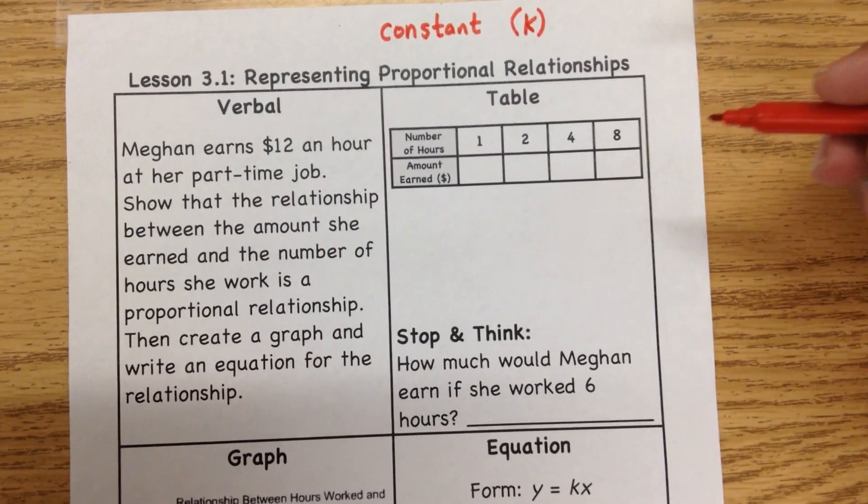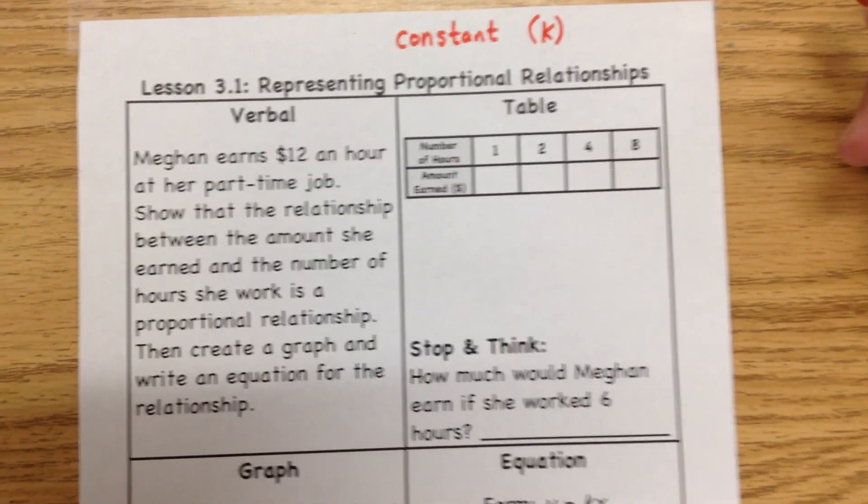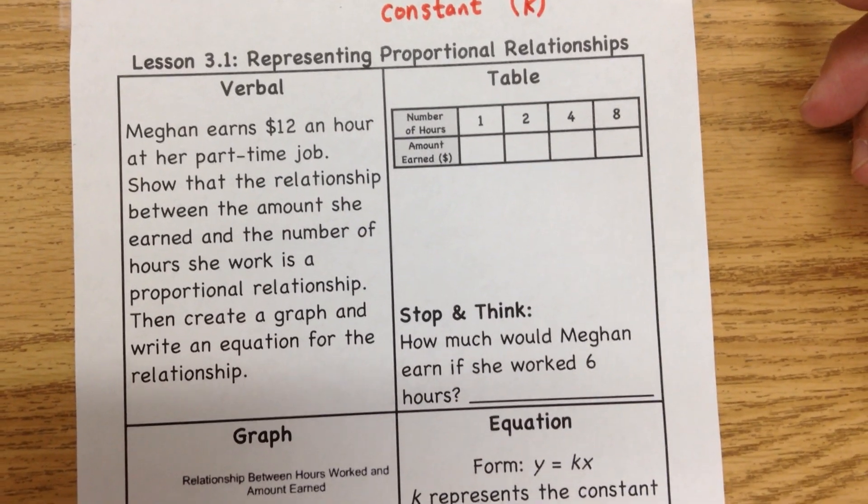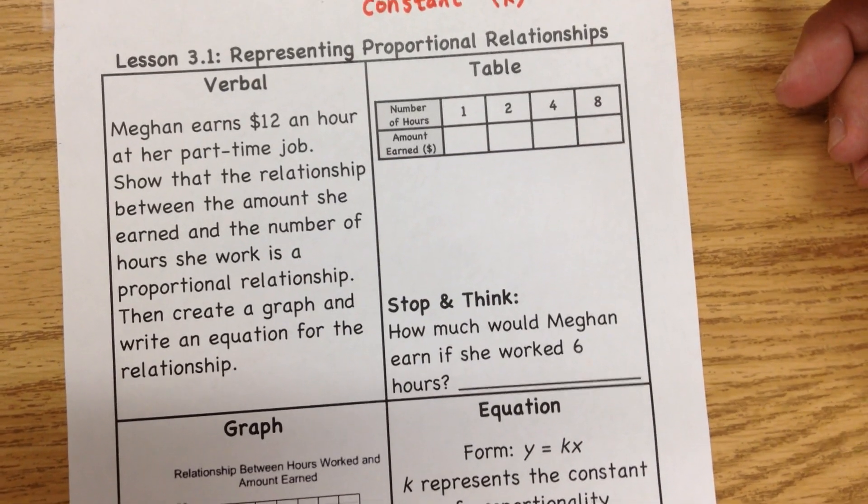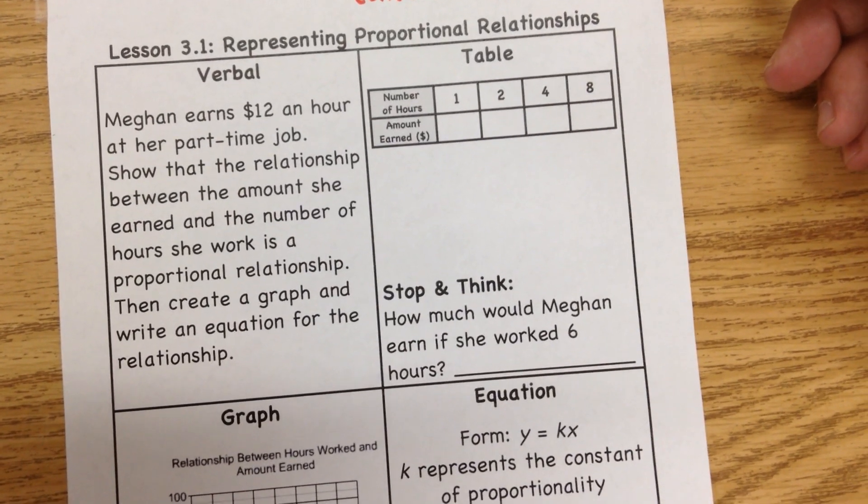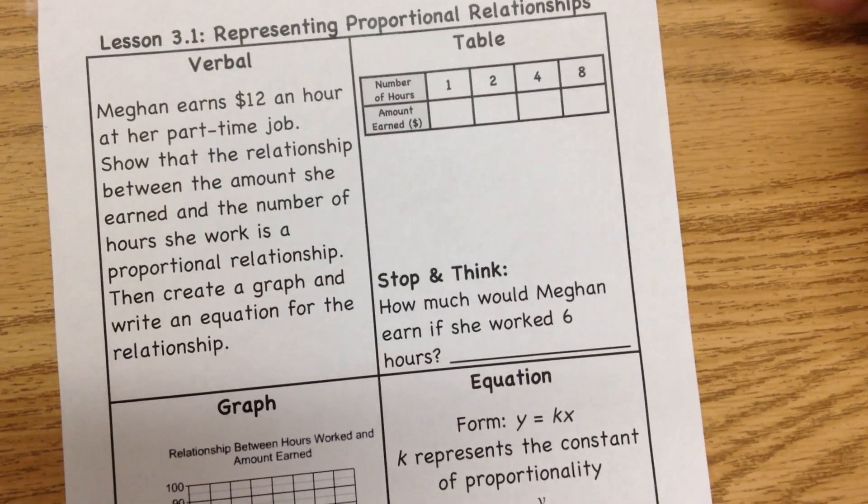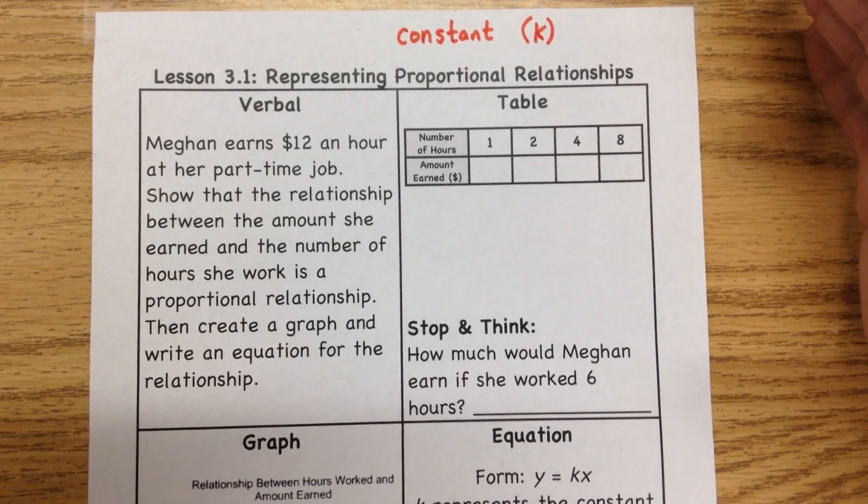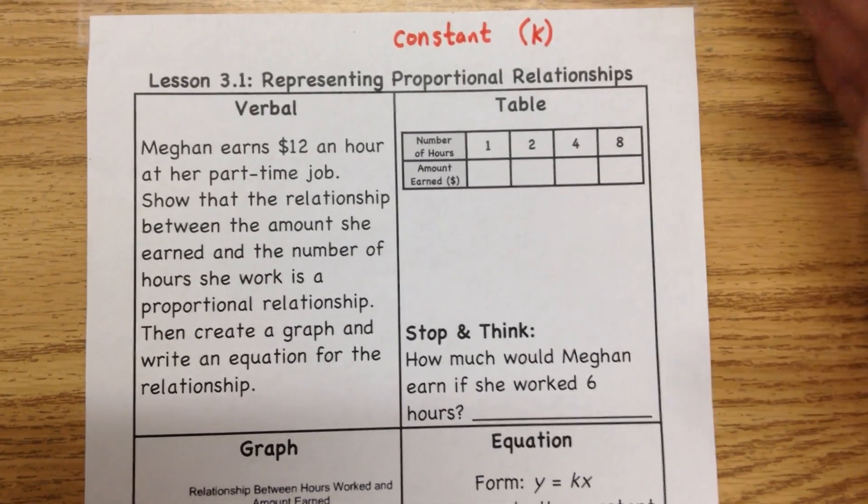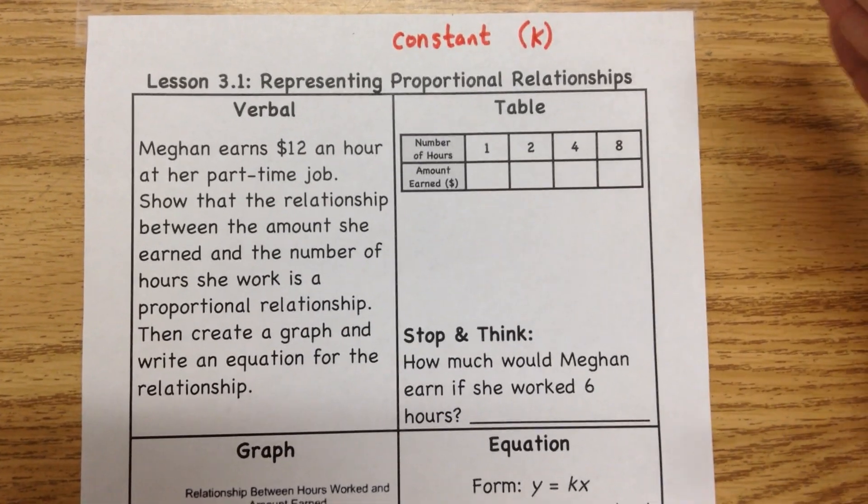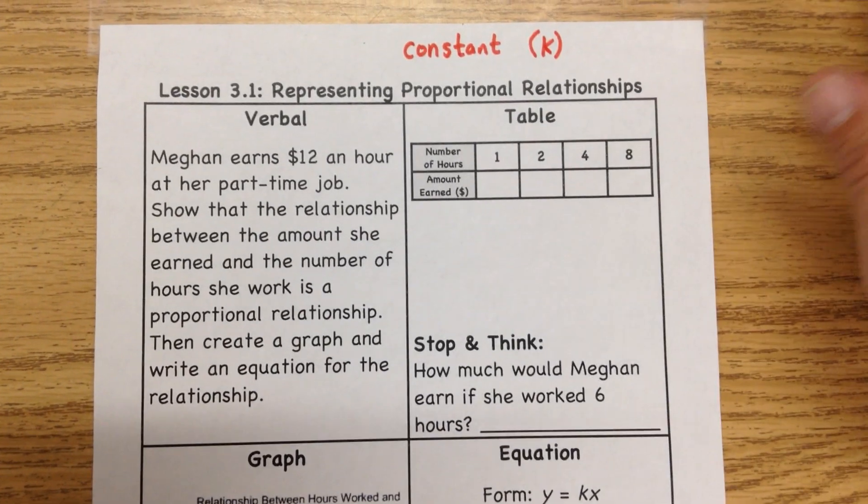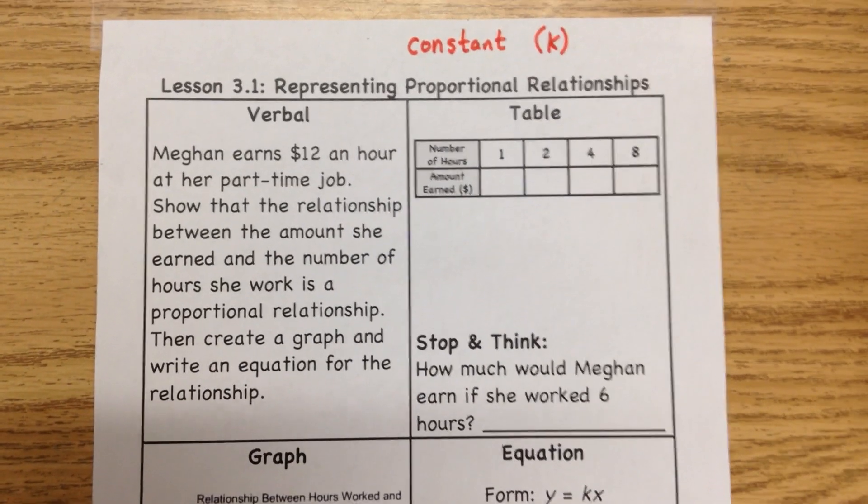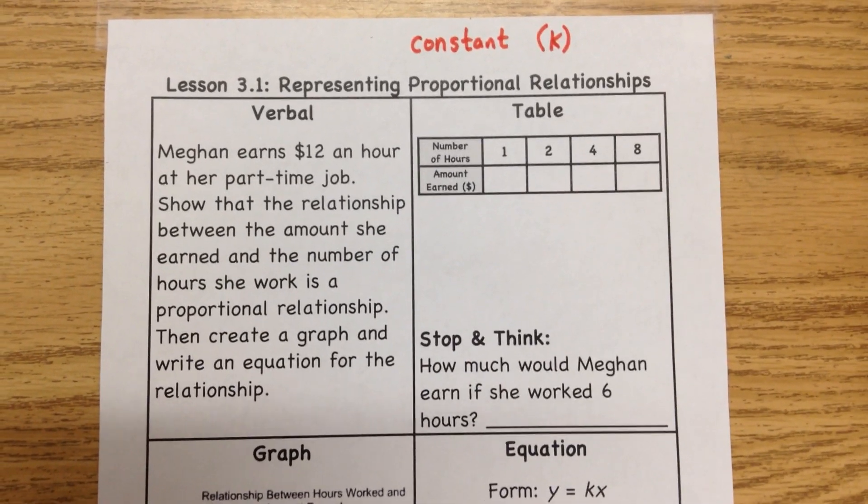The first question we have, the first situation, says Megan earns $12 an hour at her part-time job. Show that this relationship between the amount she earned and the number of hours she works is a proportional relationship. The fact that she makes $12 an hour every single hour, no matter what, there's no bonus, there's no tip, there's no raise or anything like that, just the fact that it's the same over and over again tells us that this is a proportional relationship.